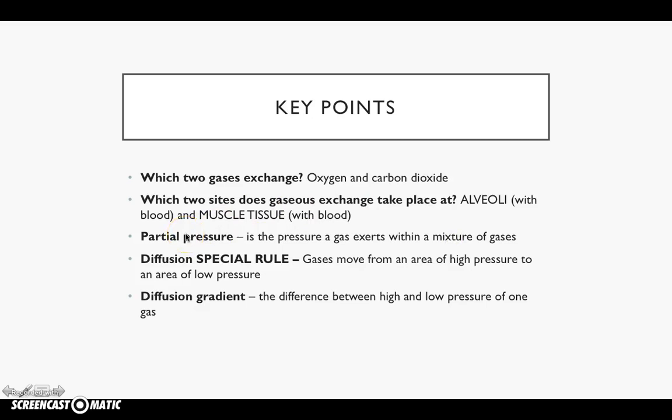Partial pressure is the pressure a gas exerts within a mixture of gases. If you have a high partial pressure of one gas — oxygen — the other gas, carbon dioxide, will have a low partial pressure within that mixture, and vice versa. The diffusion special rule: gases move from an area of high pressure to an area of low pressure. It makes sense — if you've got loads of oxygen in the alveoli, you're going to have hardly any oxygen in the bloodstream around the alveoli, and a lot of carbon dioxide. So oxygen diffuses from the alveoli into the bloodstream, and carbon dioxide diffuses from the bloodstream into the alveoli.